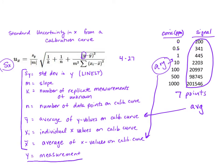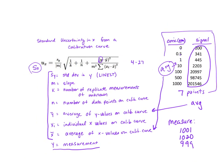y is equal to your measurement. Let's say we're using this calibration curve and our measurement we're going to measure three times. Let's say we get 1001, 1120, and 999 for our three measurements.